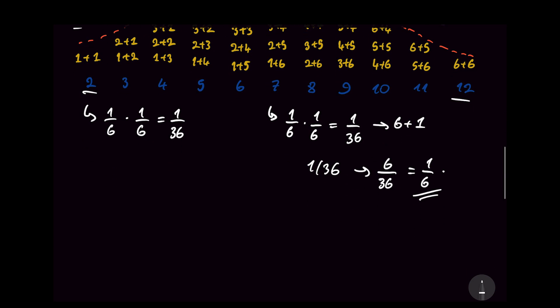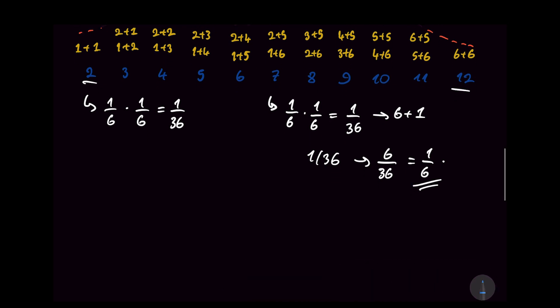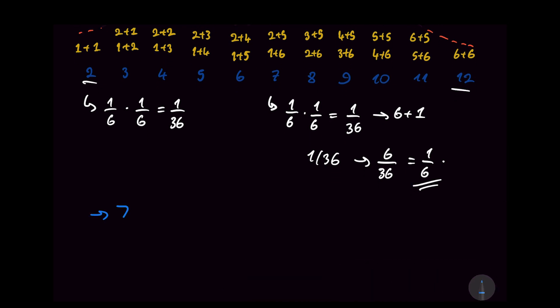Now the terminology for this, we can go ahead and call the number that we get in the total, so the number 7 here for example, the macrostate of the system. And then we can call the 6 plus 1 that we get in order to get a 7, the microstate of the system.